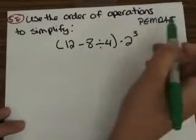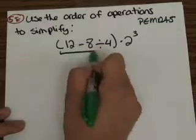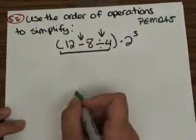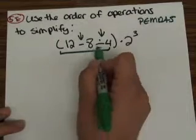The first thing we want to do is go inside the parentheses. We have subtraction and division. Division always comes first. So 8 divided by 4 gives us 2.